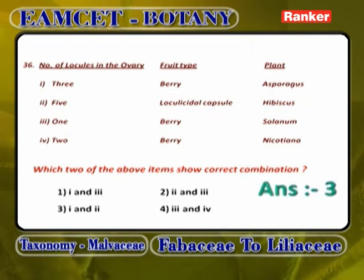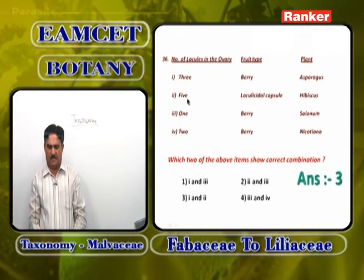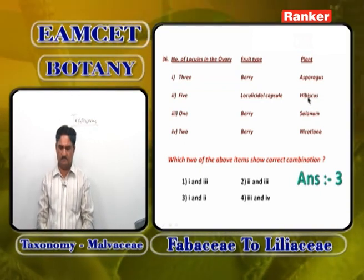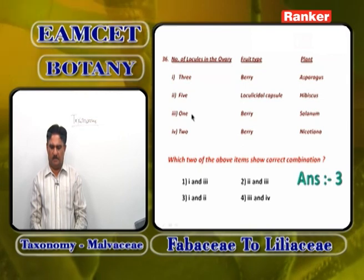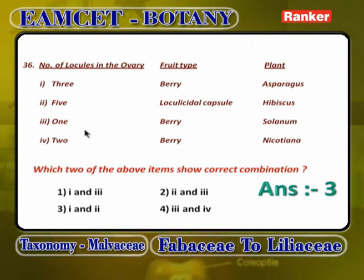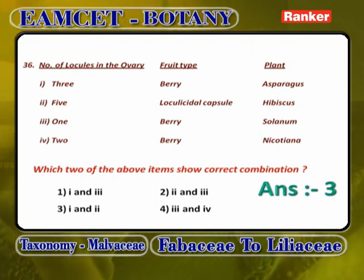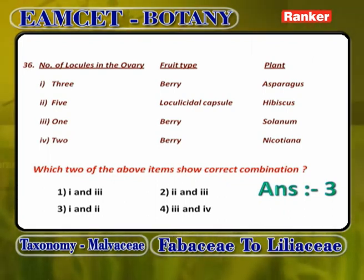Three-column matching — number of locules, fruit type, and plant: 3 carpels/3 locules/berry/Asparagus — correct. 5 carpels/loculicidal capsule/Hibiscus — correct. 1 locule/berry/Solanum — wrong, Solanum has 2 locules. 2 carpels/Nicotiana — wrong, Nicotiana is multicarpellary. So options 3 and 4 are wrong, 1 and 2 are correct. Answer is option showing one and two.